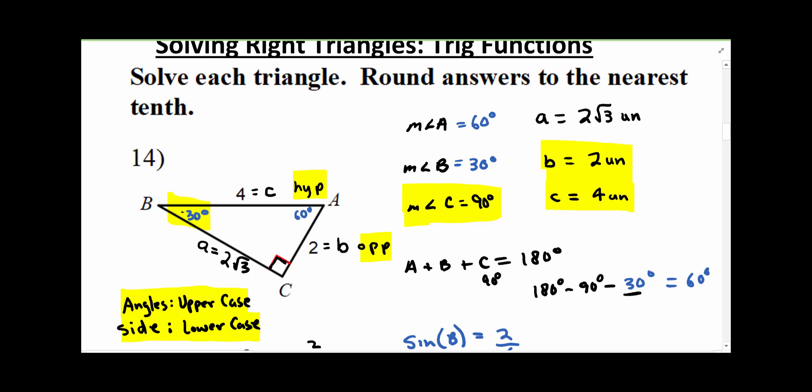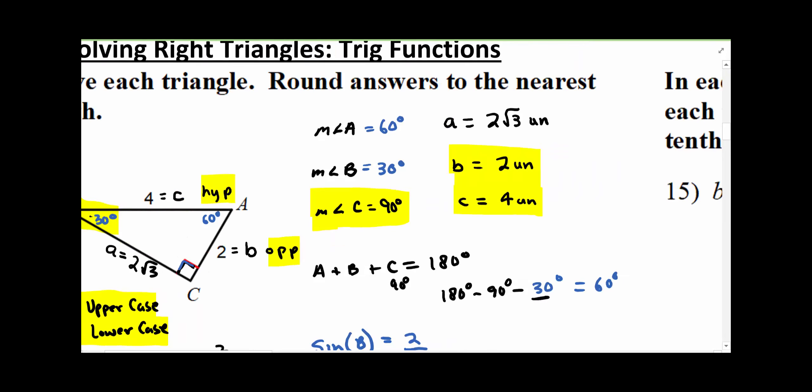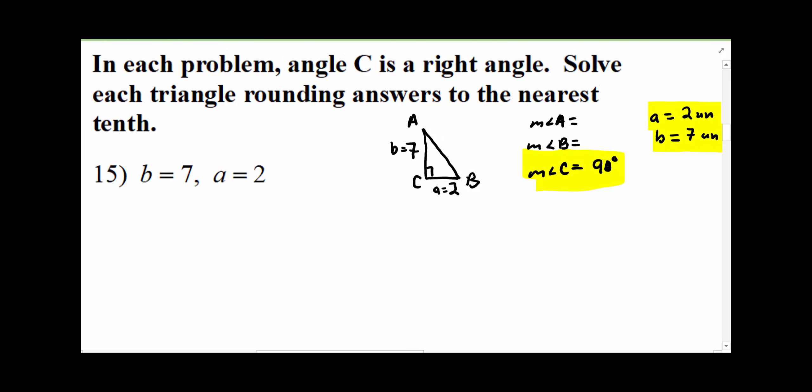And that makes sense, because 30 plus 60 equals 90, 90 plus 90 equals 180. All right, let's come over here. Each problem, angle C is right angle, solve each triangle.